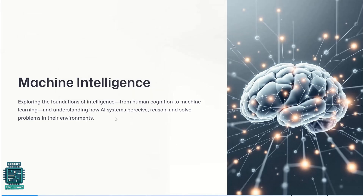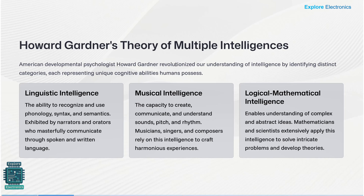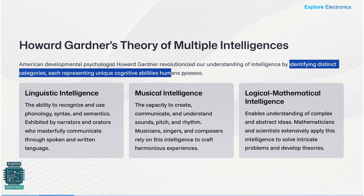Before understanding machine intelligence, we need to understand the different aspects of human intelligence — how humans understand things and what happens around them. We have a definition given by Howard Gardner, an American developmental psychologist who revolutionized our understanding of intelligence by identifying distinct categories representing unique cognitive abilities of human processing.